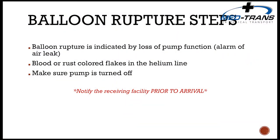Balloon pump rupture is usually indicated by loss of balloon inflation, an air leak alarm, and possible blood or rust-colored flakes in the tubing line. If rupture is suspected, turn the balloon pump off immediately.